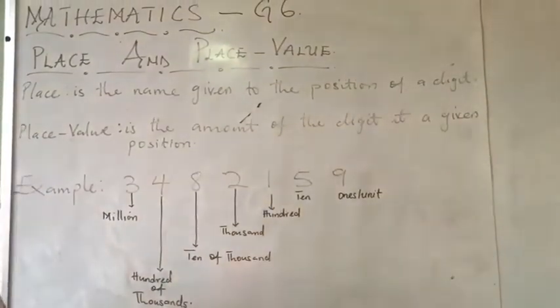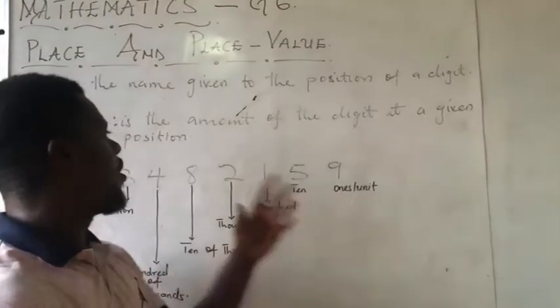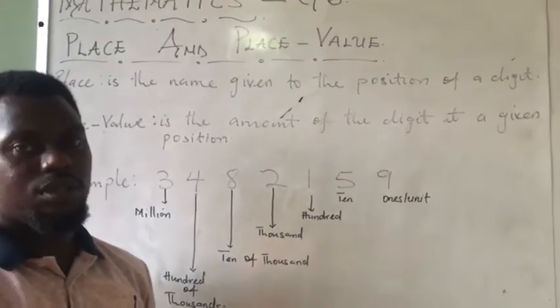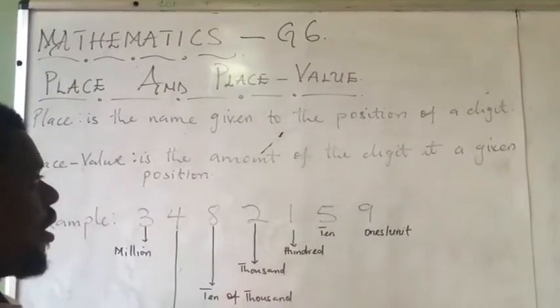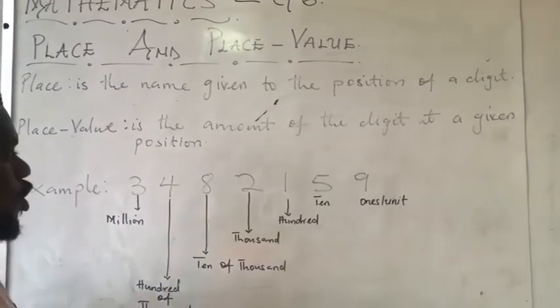Then when we talk about the place value, we are talking about the amount of the digit at a given position. That is the meaning of the place value. The amount of the digit at a given position.